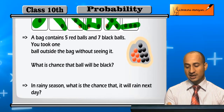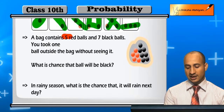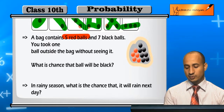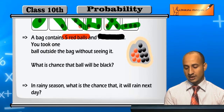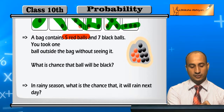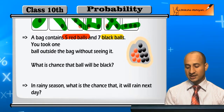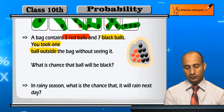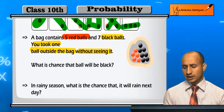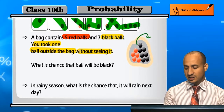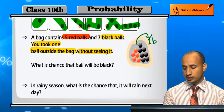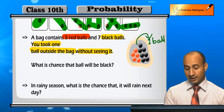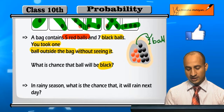Take a bag — what is inside the bag? There are five red balls and seven black balls. What are the chances of picking a particular ball? If you take one ball outside the bag without seeing it, what will happen? You will see whether that ball is black or red.